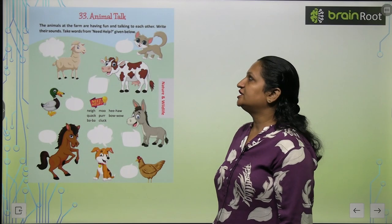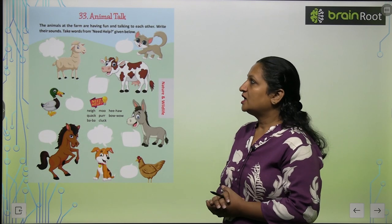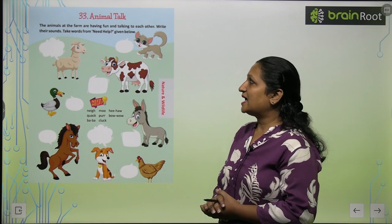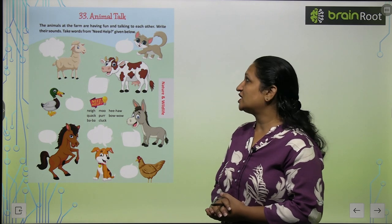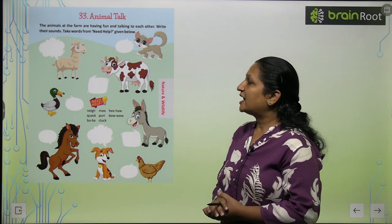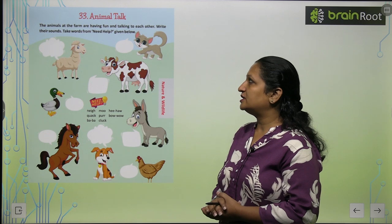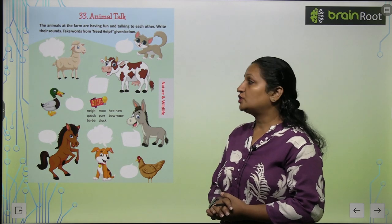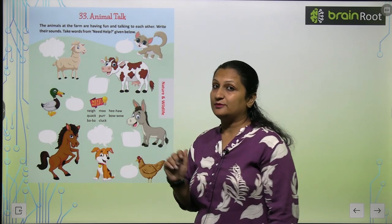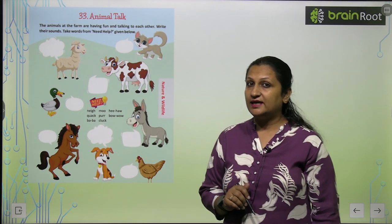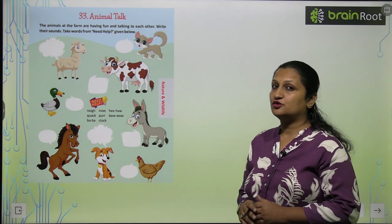Chapter 33: Animal Talk. The animals at the farm are having fun and talking to each other. Write their sounds — take words from the help given below. Here we have different animals and we have to match them with their sounds.